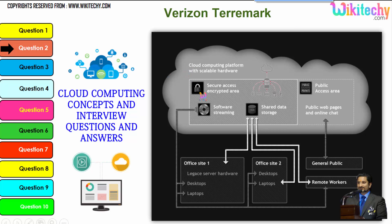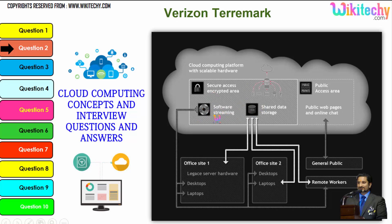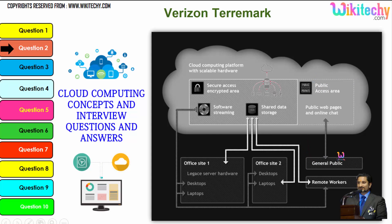In cloud computing you are able to see there is a public access area — public web pages for end users. Apart from this, there is secure data access, shared data storage, and software streaming. Companies can use it as a private kind of environment, and the public can use it to access web pages or websites. This is how cloud computing works.